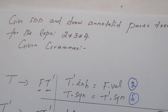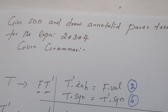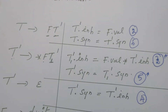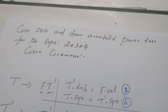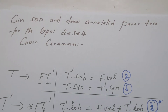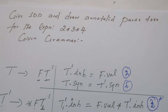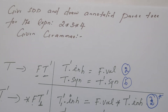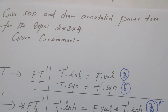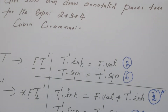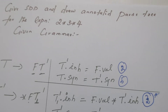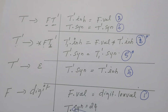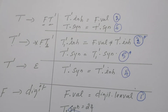This is the last problem we discussed in the recent video. We have taken prefix expression grammar and constructed an annotated parse tree. At the same time, we have written the semantic rules — for every production rule, we have written the equivalent semantic rule also.